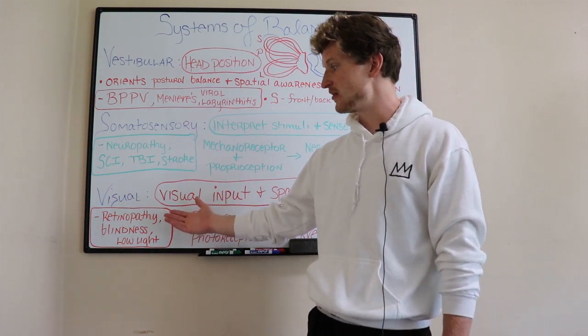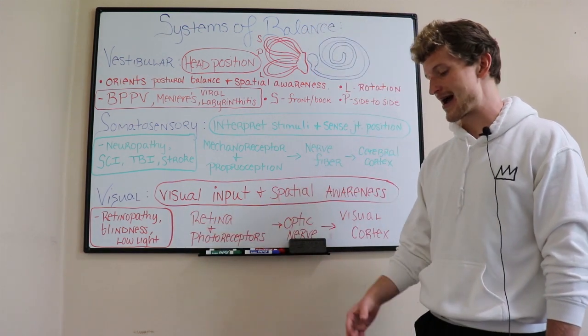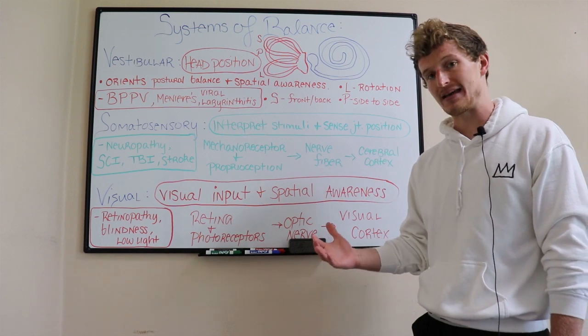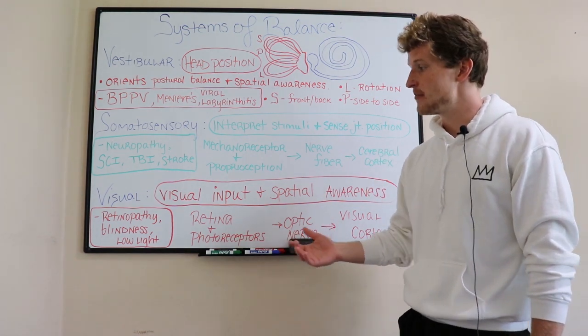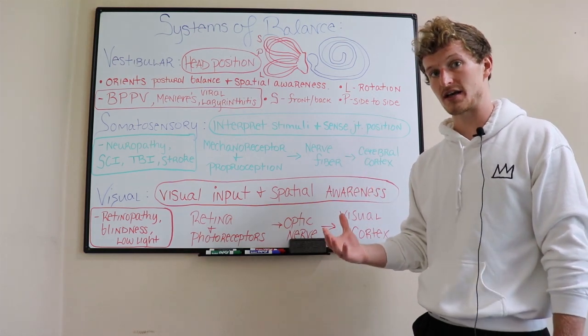Some things that would affect this include retinopathy, blindness, and low light. Low light is very important because that's something we can combat easily with nightlights, because the less light getting into my eyes, the less clear of a picture I have and the worse spatial awareness I have.